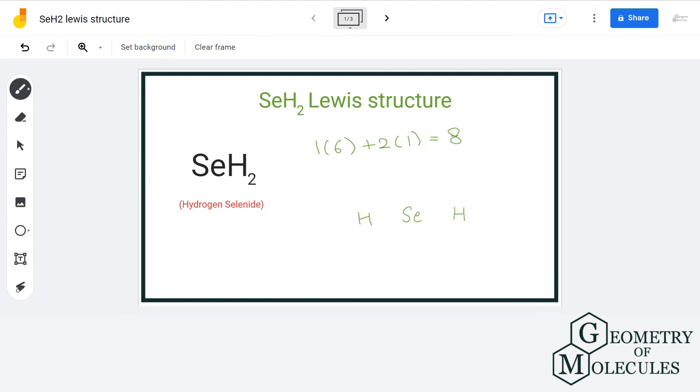Now we will place electron pairs for bond formation and assign the remaining two electron pairs to the selenium atom. All the atoms have a complete outer shell in this Lewis structure with a formal charge of zero.